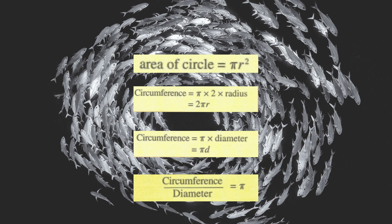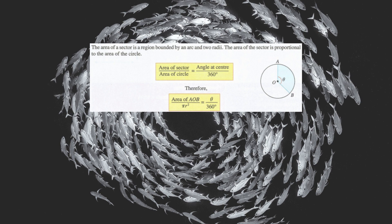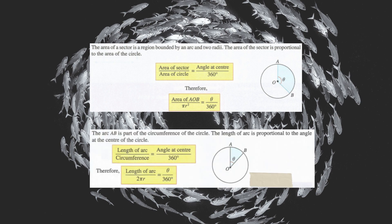The formula to find area of a circle is pi r square. The area of a sector is a region bounded by an arc and two radii. The area of the sector is proportional to the area of the circle. The arc AB is part of the circumference of the circle. The length of arc is proportional to the angle at the centre of the circle.